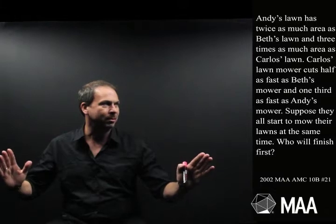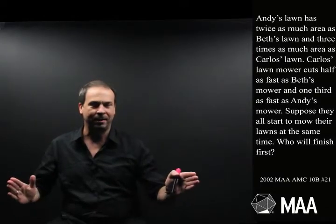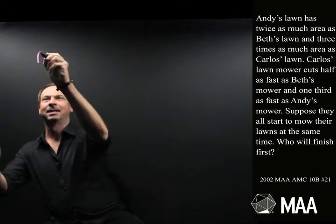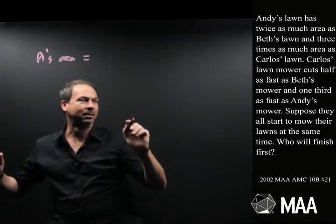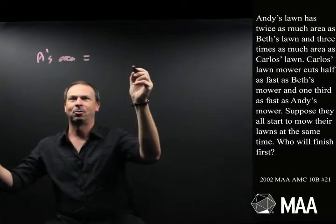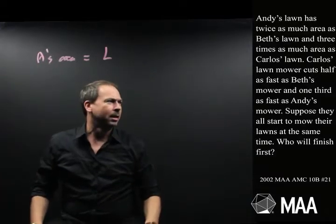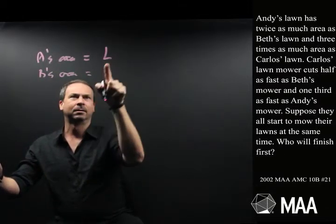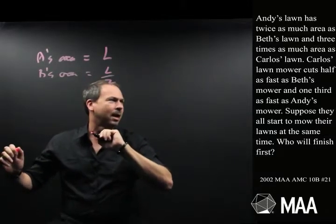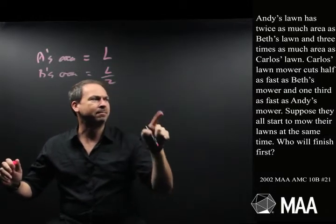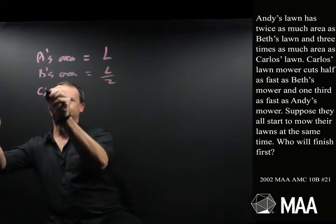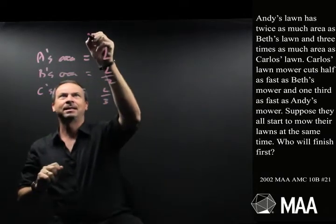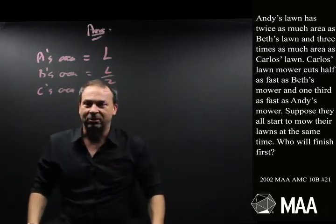Andy. Andy's lawn has twice as much area as Beth's lawn and three times as much area as Carlos's lawn. Let me put that into math speak. Notice how the names are A, B, and C. That's kind of handy. Alright, so A's area. Andy's area is, I don't know what the area is, I'll just call it, I won't use A, L. L for lawn. The amount of lawn he has is L. That's twice as much area as Beth's lawn. So B's area, oh, it's half of that. L over two. And Andy's lawn is twice as much as Beth's and three times as much area as Carlos's lawn. I have to keep rereading this question. So C's area, L is three times as much as that. Must be a third of L. Alright, so these are the areas we're dealing with. And that's just the first sentence of the problem.